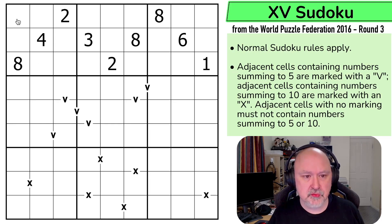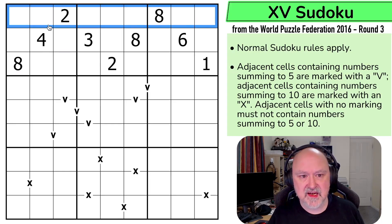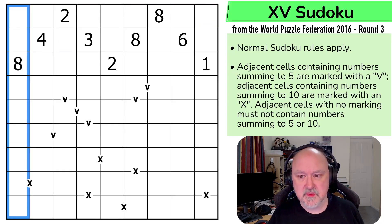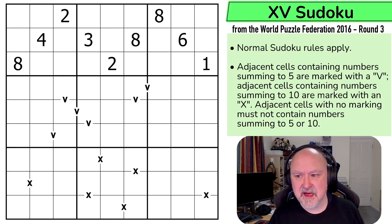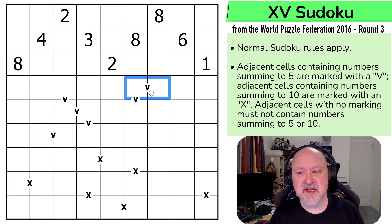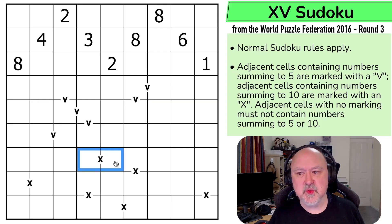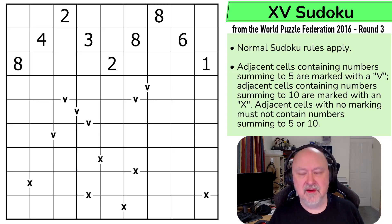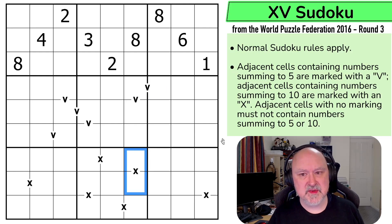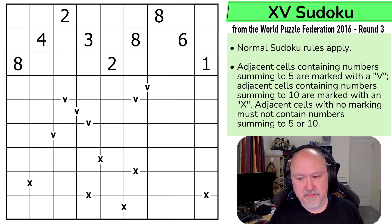Normal Sudoku rules apply: in every box, every row, and every column, the digits 1 to 9 must be placed without repetition. Adjacent cells containing numbers summing to 5 are marked with a V; adjacent cells containing numbers summing to 10 are marked with an X. Adjacent cells with no marking must not contain numbers summing to 5 or 10. That's the negative constraint — no V or X marking means you may not sum to 5 or 10.